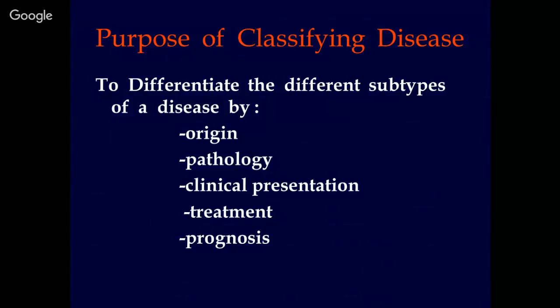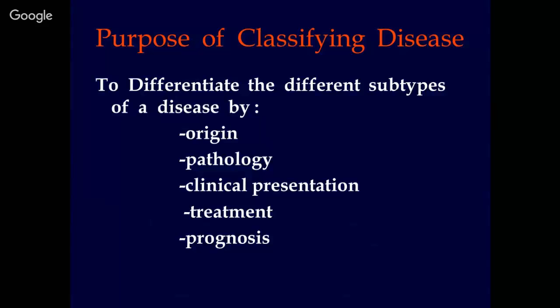What is the purpose of classifying a disease? The purpose is to differentiate the different subtypes by their origin, pathology, clinical presentation, treatment, and prognosis. Preferably a classification should satisfy all these criteria, if not at least some of them.